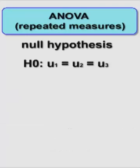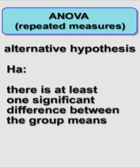Null hypothesis always states the same, that there's no significant difference between any of the means. The alternative hypothesis says yes, there is a significant difference in there somewhere.